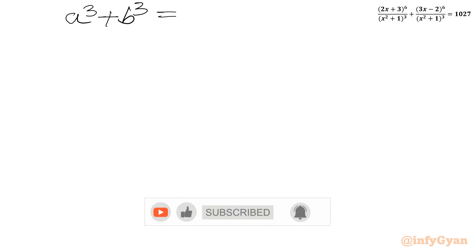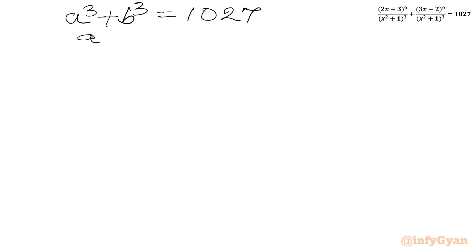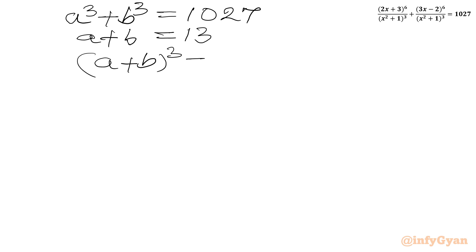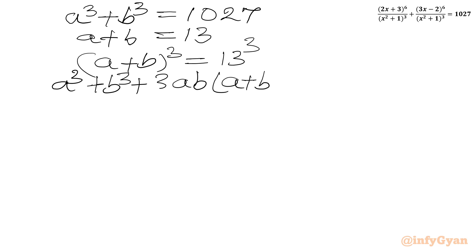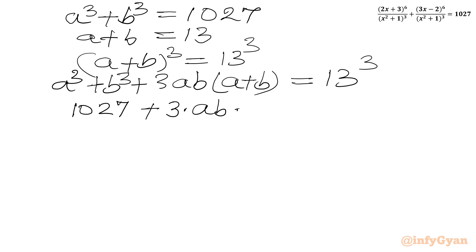Let's come back to our problem. We have equation 1: a³ + b³ = 1027, and equation 2: a + b = 13. Now I will consider cubing both sides. So (a + b)³ = 13³. Expanding: a³ + b³ + 3ab(a + b) = 13³. Substituting a³ + b³ = 1027 and a + b = 13: 1027 + 3ab × 13 = 13³.